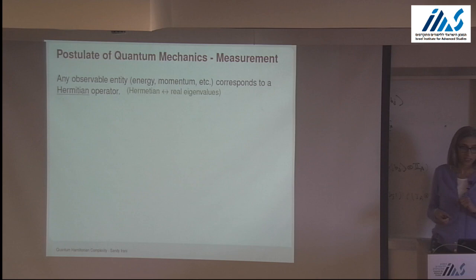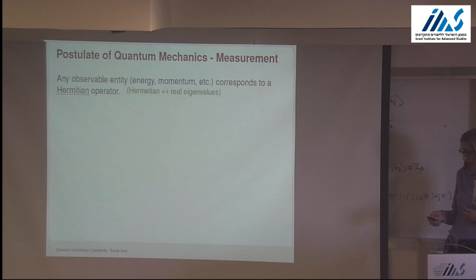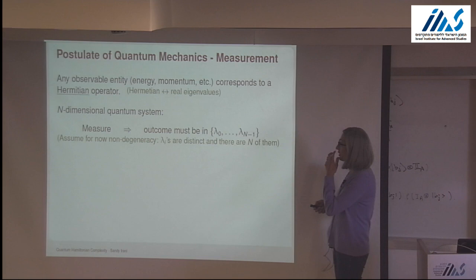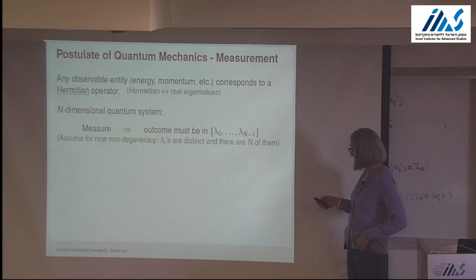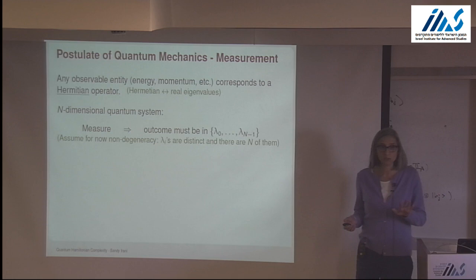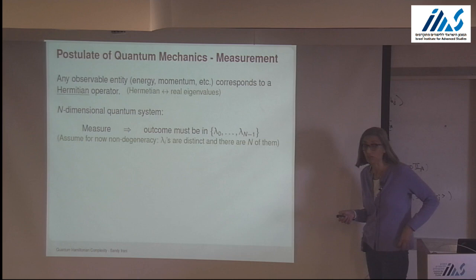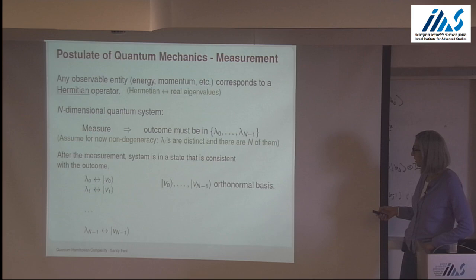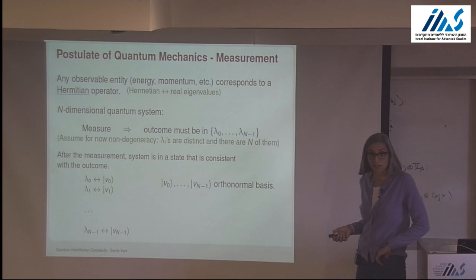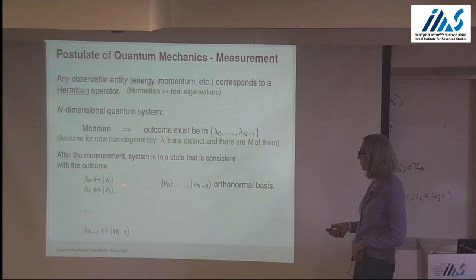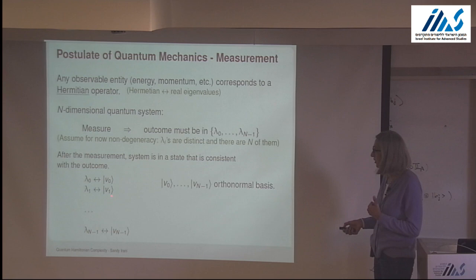A basic postulate of quantum mechanics says that any observable entity — anything I can measure, like energy or momentum — corresponds to a Hermitian operator. Hermitian means the eigenvalues of the operator are real. If I measure this entity, the outcome has to be one of n distinct values. Assuming non-degeneracy, these lambdas are all distinct, and the number equals the dimension of the Hilbert space. If I get a particular outcome, I know exactly what state I'm in afterwards.